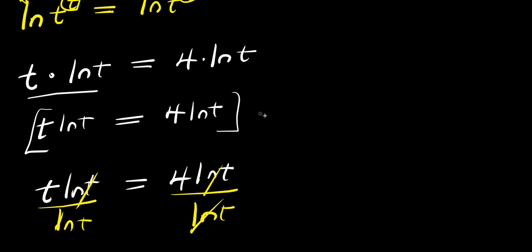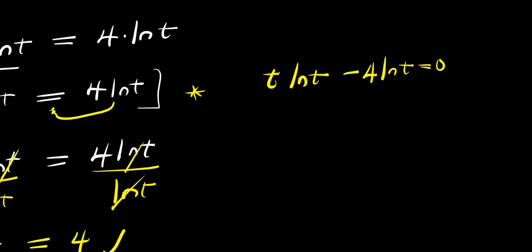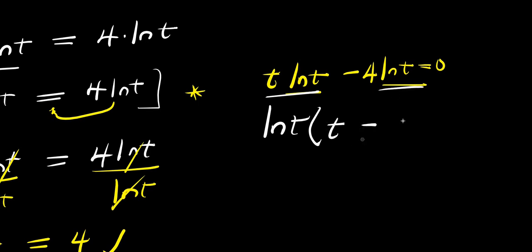Another method is by moving terms over. We have t ln(t) minus 4 ln(t) equals 0. Since there is ln(t) in both terms, we can factor it out to get ln(t) times (t minus 4) equals 0.